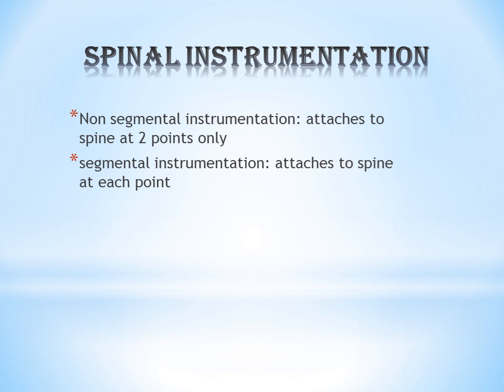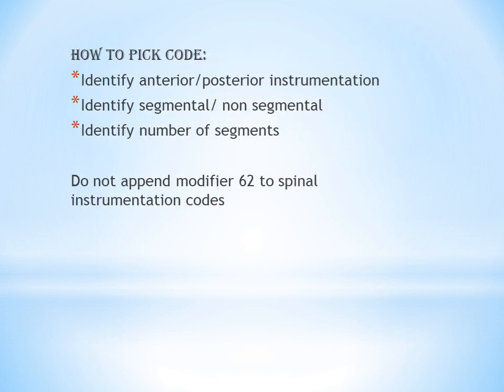The next topic is spinal instrumentation. After arthrodesis, in order to stabilize or fix the bone, devices or implants are inserted — that is called spinal instrumentation. There are two types: non-segmental instrumentation, where the devices are attached only at two end points of the spine, and segmental instrumentation, where attachment is given at each vertebral level.